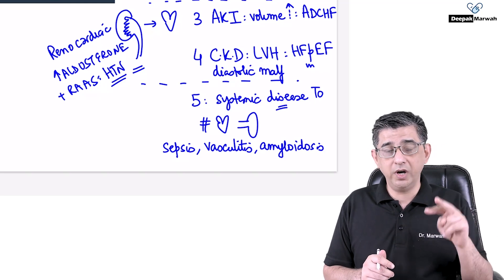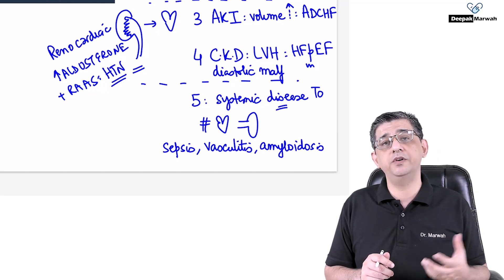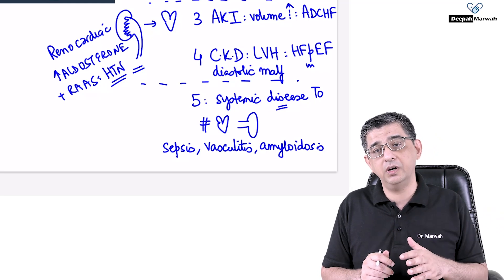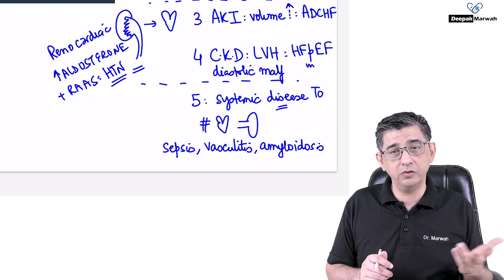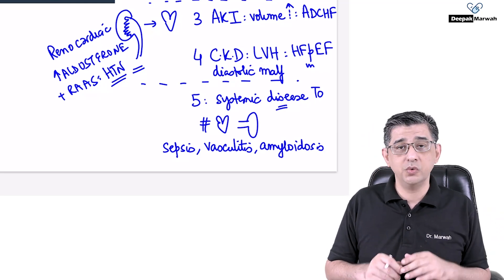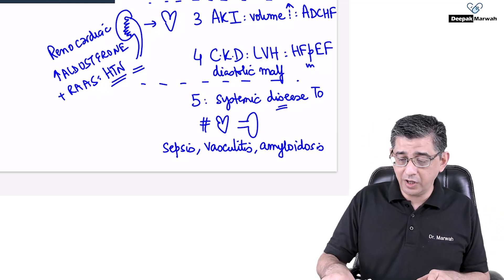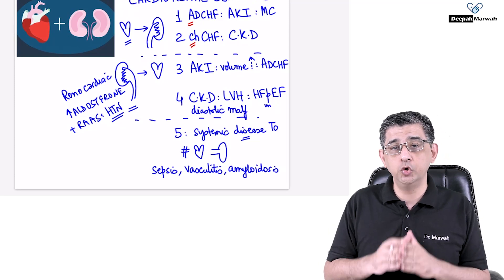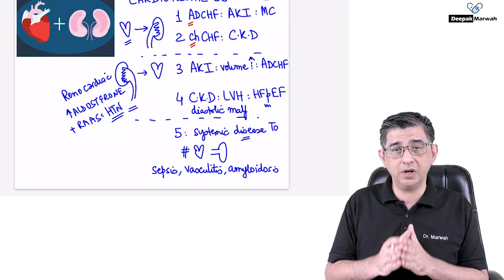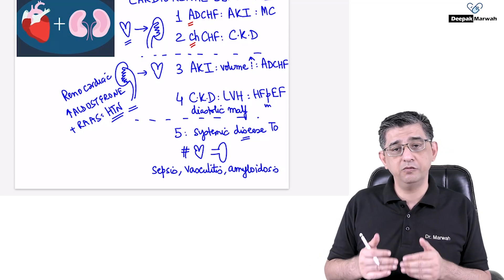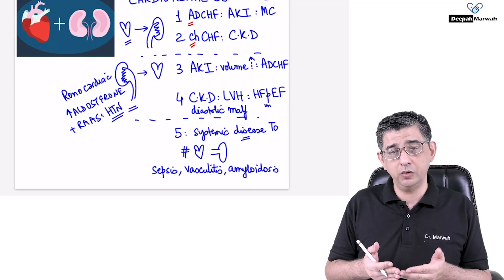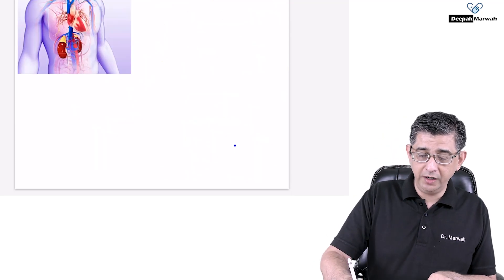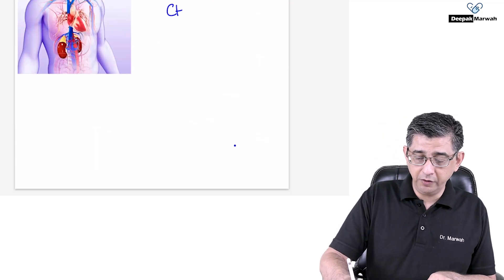So to summarize: heart involved first followed by kidneys — Types 1 and 2, acute and chronic respectively. Kidneys involved first followed by the heart — Types 3 and 4, acute and chronic. And Type 5 is systemic disease affecting both. With this orientation, you would be able to correctly answer any case-based scenario on the five types of cardiorenal syndrome.